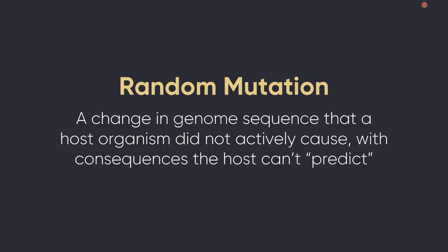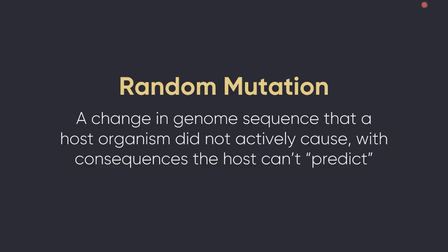That doesn't mean that if we had perfect knowledge of everything in the universe we couldn't predict it — probably we could — but we don't have infinite information about the universe, so there are lots of things that are random to us. When scientists talk about random mutations, they're usually talking about a change in genome sequence — a change in the DNA sequence or an RNA sequence in an organism with an RNA genome, like some viruses — any change in a genome sequence that the host organism did not actively cause and whose consequences the host organism didn't really predict. Organisms don't really predict what mutations are going to do, but over evolutionary time you can get the evolution of enzymes that behave in a specific way because in the past behaving that way worked — a kind of prediction in quotes.